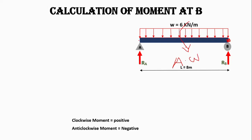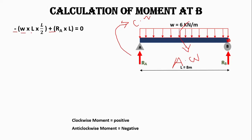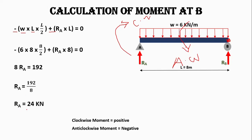Considering the moment at point B, the UDL will bend the beam in the anti-clockwise direction, so we consider it negative. The support Ra will resist the bending moment in the clockwise direction, considered positive. W is the uniformly distributed load, L is the length where the UDL acts, and L/2 is the centroid of the UDL. After putting in the values, Ra equals 24 kilonewtons.